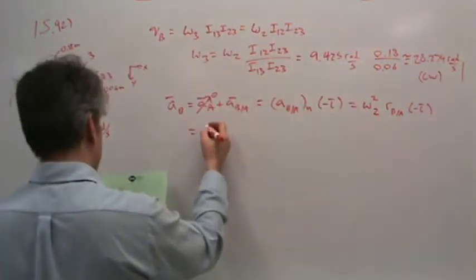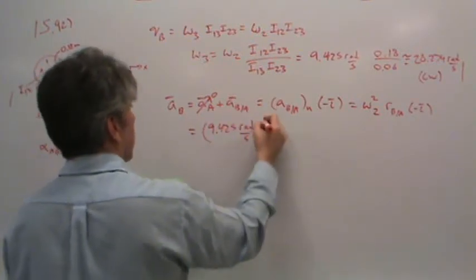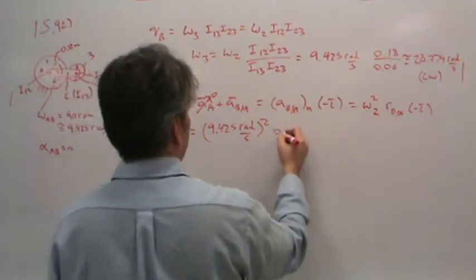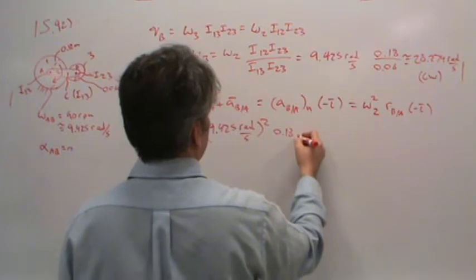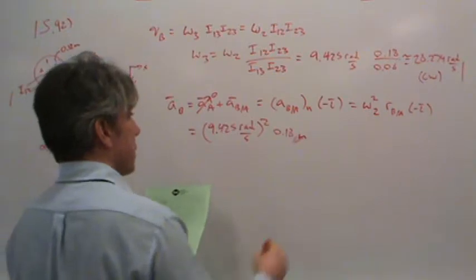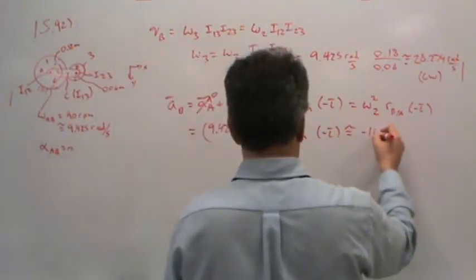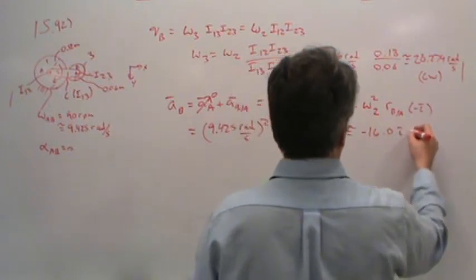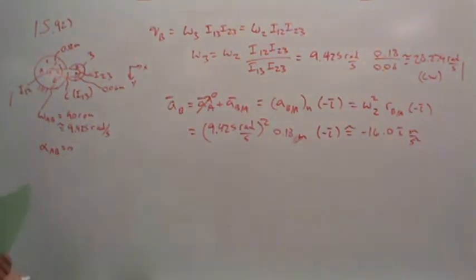So plugging in numbers, we'd have 9.425 radians per second quantity squared. R_AB is 0.18 meters. So this comes out to about negative 16.0i meters per second squared. Not surprisingly, it's pointed to the left. So there's the acceleration of point B,